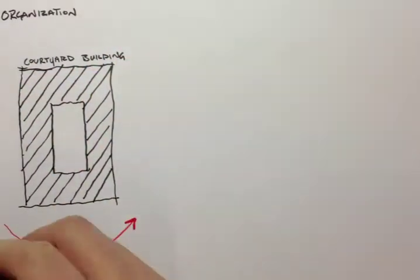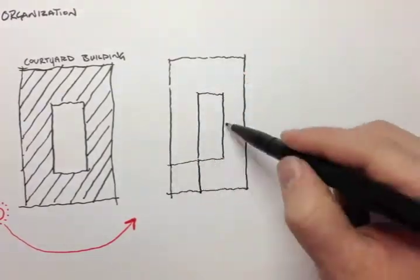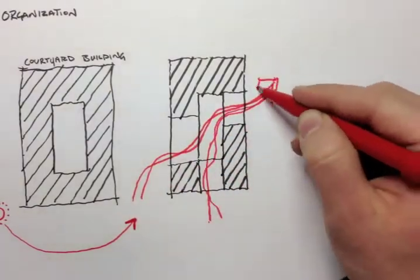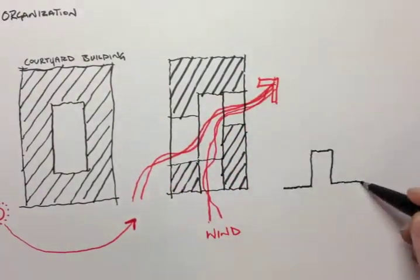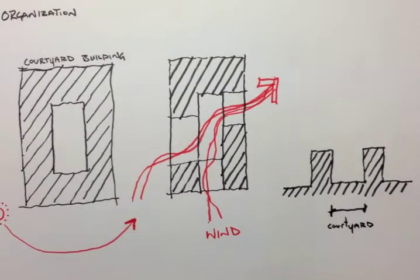The first is locating outdoor rooms. The second is permeable buildings, which includes stack ventilation and cross ventilation. And the third strategy is shady courtyards. This strategy uses the new or existing buildings to shade the courtyard.